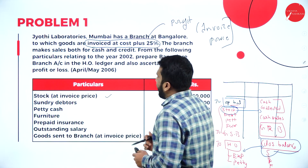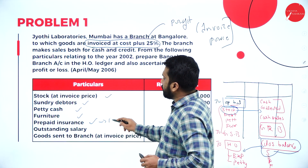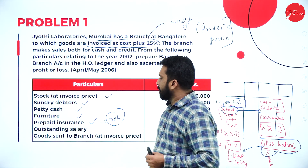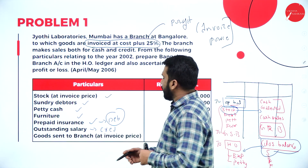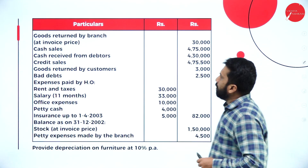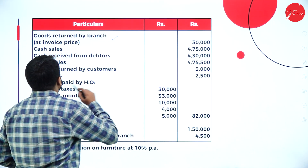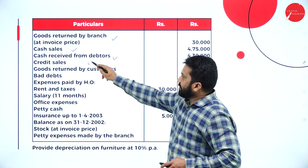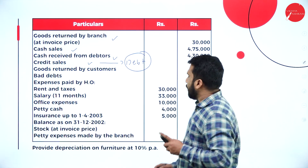In the problem, they have given stock, debtors, petty cash, furniture, and prepaid — remember, prepaid comes under the debit side. Opening prepaid always goes to debit. Outstanding salary, if it is opening, will go to credit. Goods sent to branch at invoice price goes to the debit side. Goods returned by branch goes to the credit side. Cash sales and cash received from debtors — credit sales go to the debtors account.